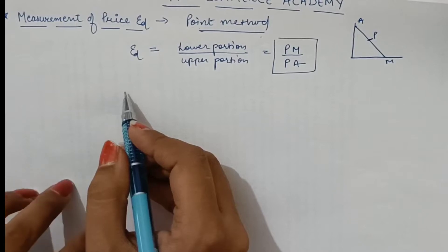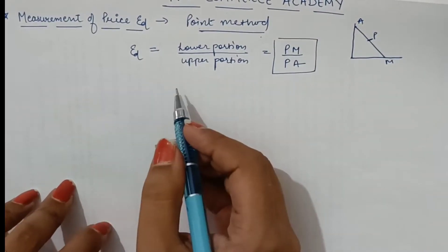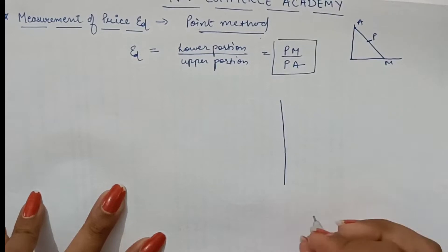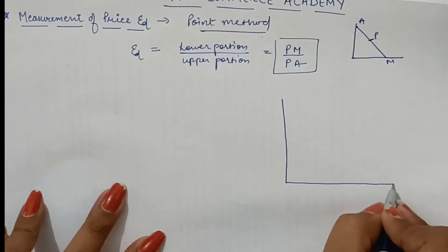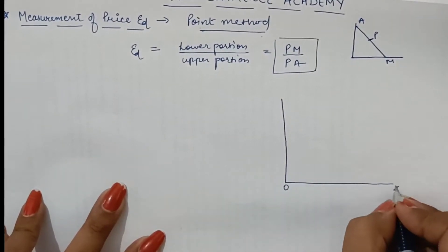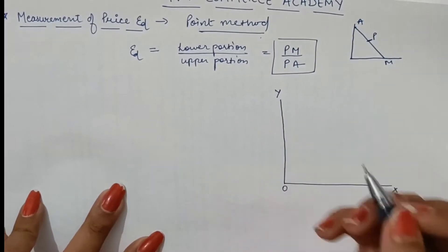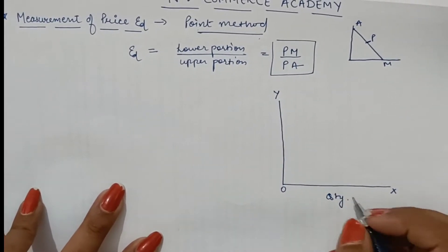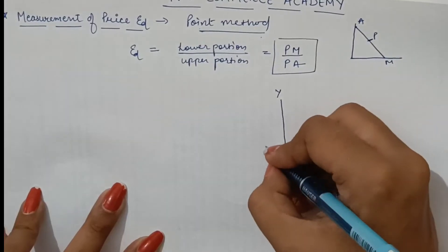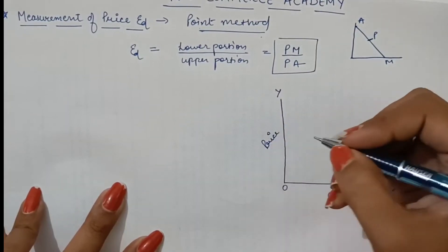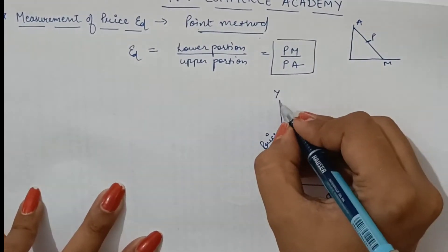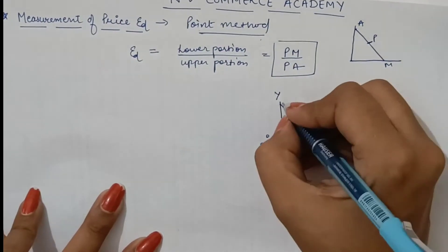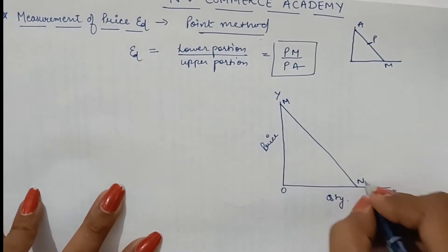Now we come to the derivation of the formula. For derivation, we will draw a demand curve. At a given point on the demand curve, we will calculate price elasticity of demand. On the XY plane, X-axis shows quantity and on Y-axis, price is shown. This is a demand curve named M and N.